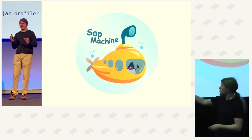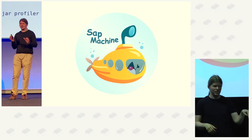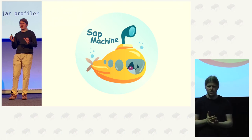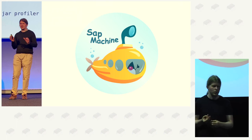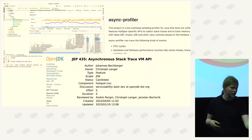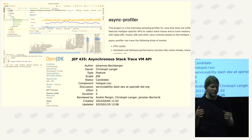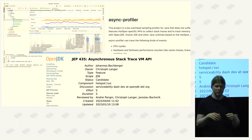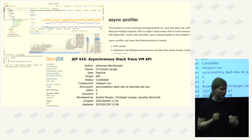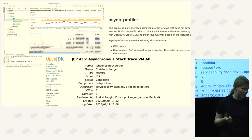So who am I? I'm Johannes Bechberger. I'm sometimes talking about profilers — including in London. I work at the submachine team at SAP, a team of around 15 people working on OpenJDK. I work specifically on profilers, profiler frontends, and profiling APIs. That's one of the reasons I'm standing in front of you — I initially wanted to name this talk 'Tales of a Profiler API Developer,' because I know a lot of profiling APIs.